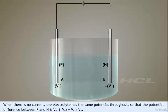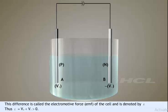When there is no current, the electrolyte has the same potential throughout, so that the potential difference between P and N is V positive minus minus V negative equals V positive plus V negative. This difference is called the electromotive force, EMF of the cell, and is denoted by epsilon. Thus, epsilon equals V positive plus V negative, which is greater than zero.